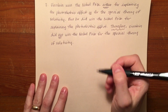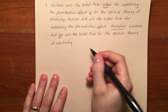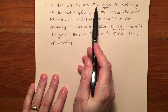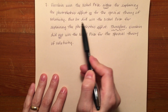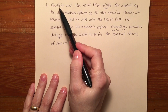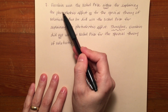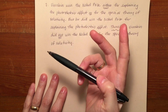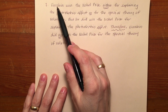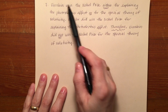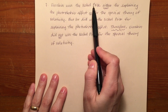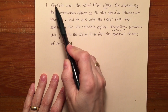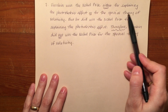If I'm confused about how to start this translation, I might think Einstein won the Nobel Prize is the proposition, but there's more to it. This statement is not a simple proposition — it's actually a compound proposition, two propositions that look like one. It really says either Einstein won the Nobel Prize for explaining the photoelectric effect or Einstein won the Nobel Prize for the special theory of relativity.